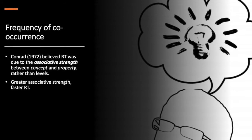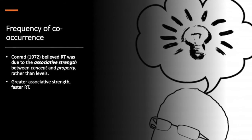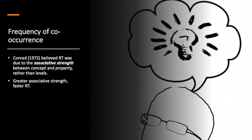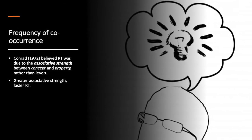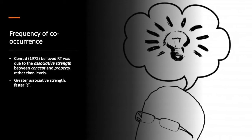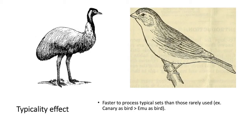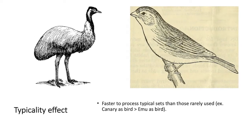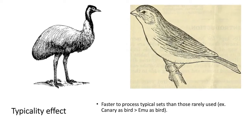Frequency of co-occurrence. Conrad in 1972 believed that reaction time was due to associative strength between the concept and the property, rather than levels. Greater associative strength must have meant faster reaction time. There was also a typicality effect, whereby it was faster to process typical sets than those that were rarely used or mentioned.